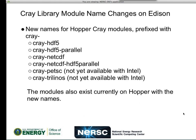Here are the details on the Cray module name changes. The two significant things are at sub-bullets 5 and 6: there are two Cray modules not yet available for the Intel compilers, Petsc and TriLinux. But that presumably will be soon. You can use these names in your Hopper make files for the modules, because the modules already exist under those names on Hopper.